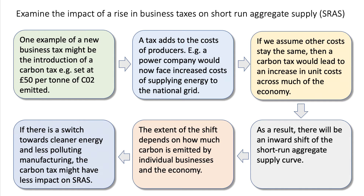As a result — connective phrase — there will then be an inward shift of the short-run aggregate supply curve. The extent of the shift depends on how much carbon is emitted by individual businesses and sectors of the economy, for example the fuel efficiency of the aviation sector or carbon emitted per unit of GDP across car manufacturing or the construction sector.